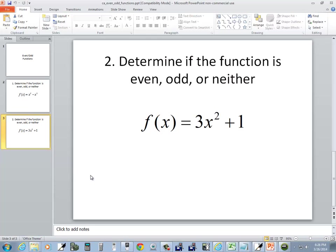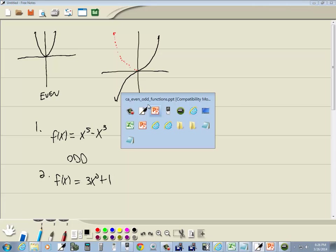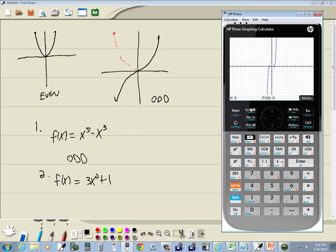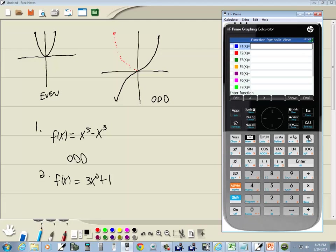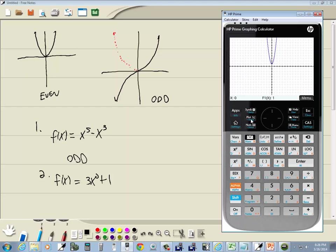We've got f of x is equal to 3x squared plus 1. Same instructions. We want to determine if it's even, odd, or neither. Now, press symbol. Go back here. Press backspace. 3x key x squared plus 1. Enter. And then we'll press plot to graph it.